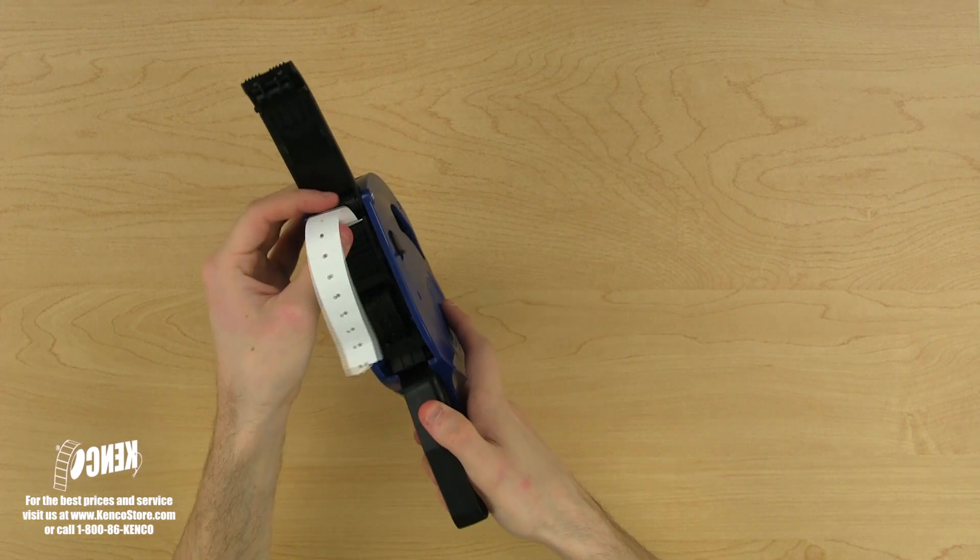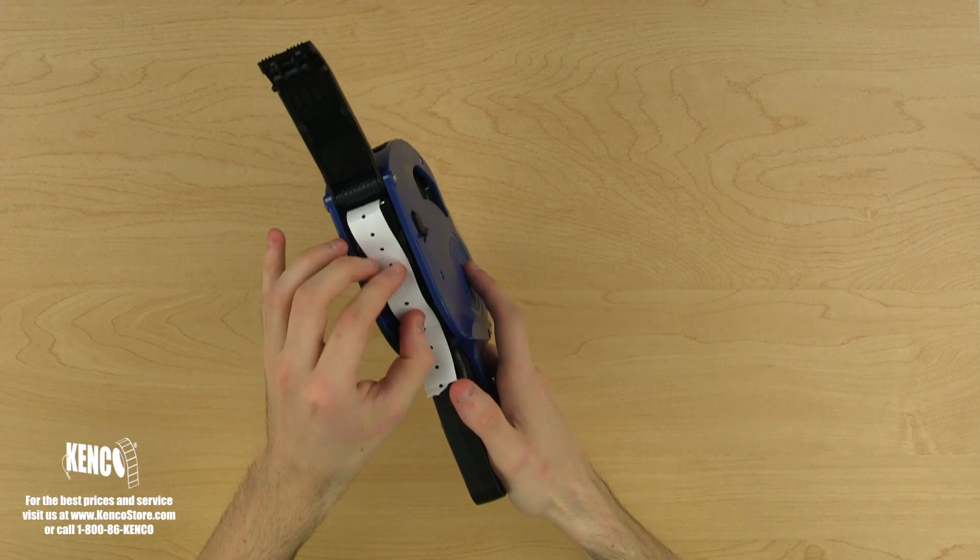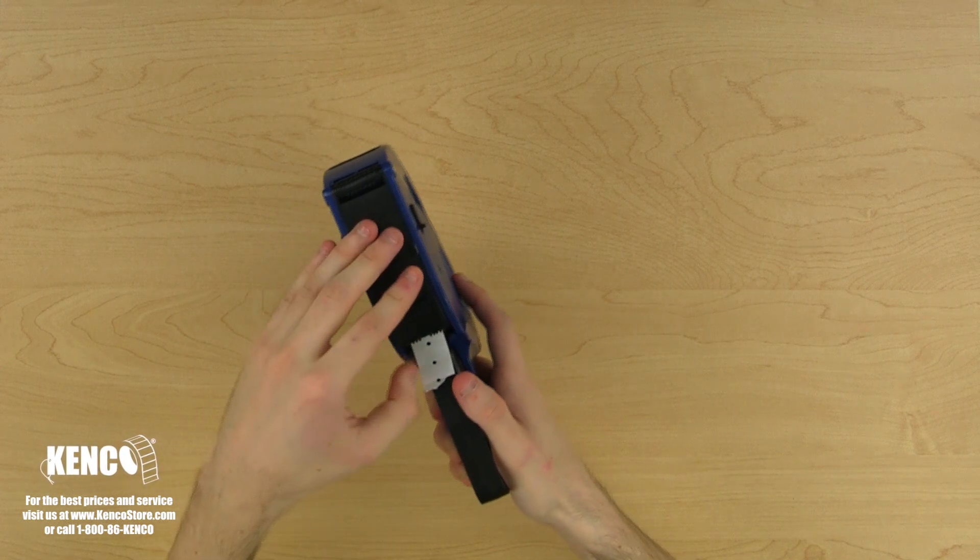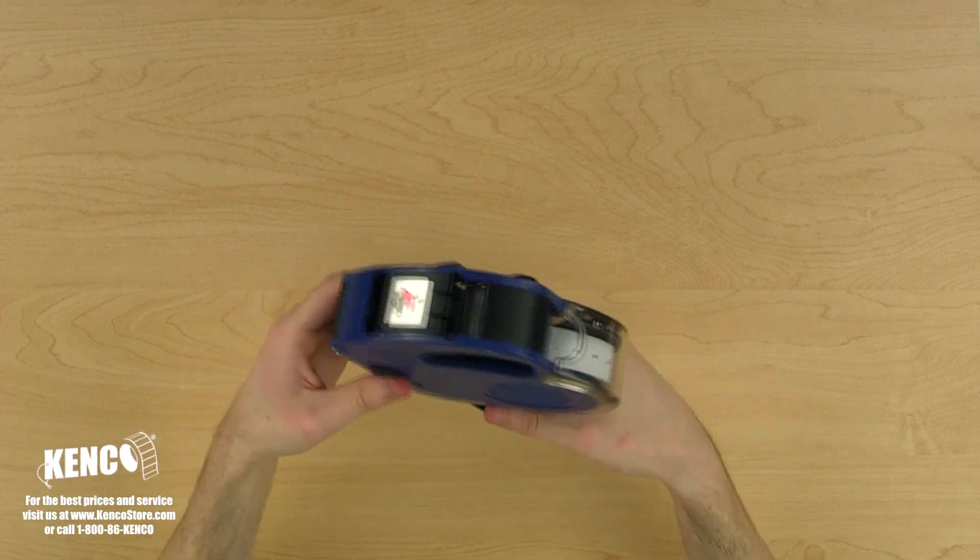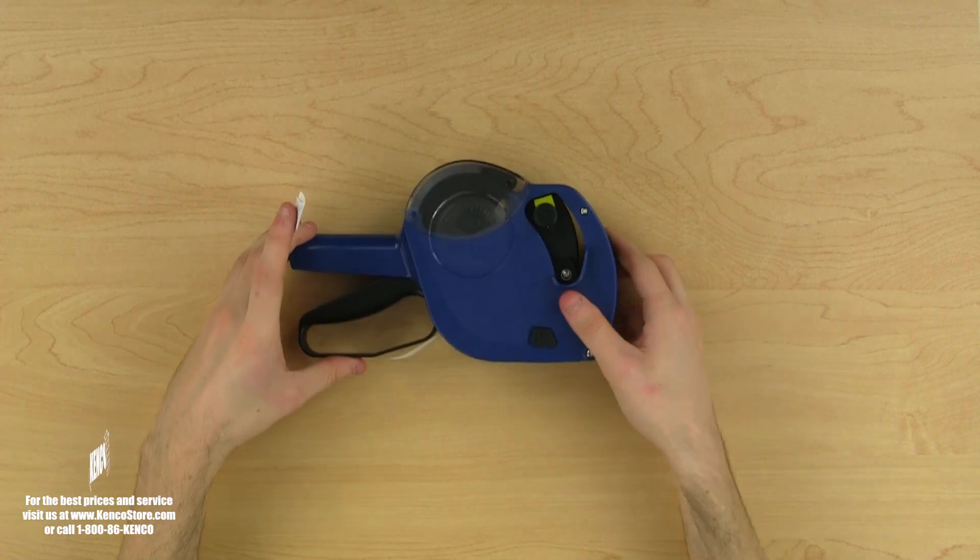Next, we need to fold the labels over the pressure plate and the advancing mechanism. When you rest the labels on the advancing mechanism, line up two of the holes on the labels with the sprockets and close the bottom cover. Now that the gun is properly loaded, we'll learn how to adjust the price.